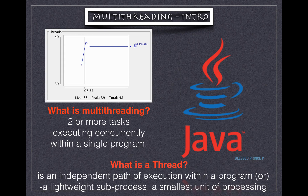What is a thread? A thread is an independent path of execution within a program, or you can call it a lightweight sub-process — the smallest unit of processing. You can find a lot of definitions, but let's see with a simple example.